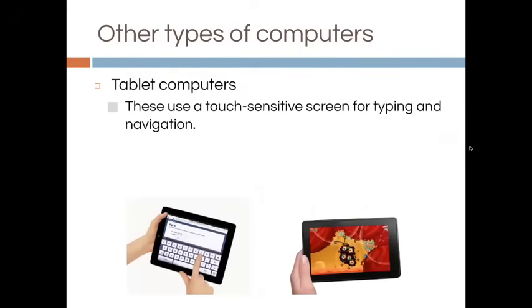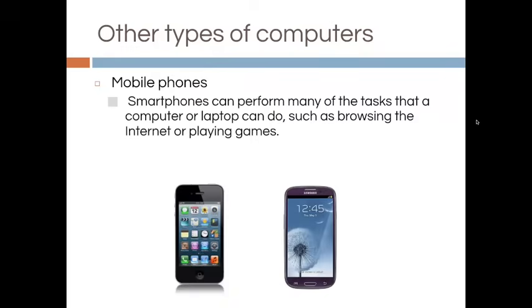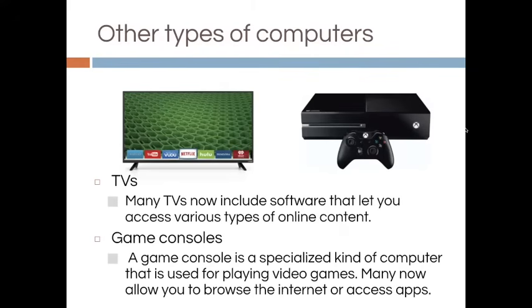Tablet computers use a touch sensitive screen for typing and navigation. Mobile phones are computers — they can do a lot of things that computers can do. Many smart TVs now include software that lets you access various types of online content. A game console is a specialized kind of computer used for playing video games, and many now allow you to browse the internet or access apps.